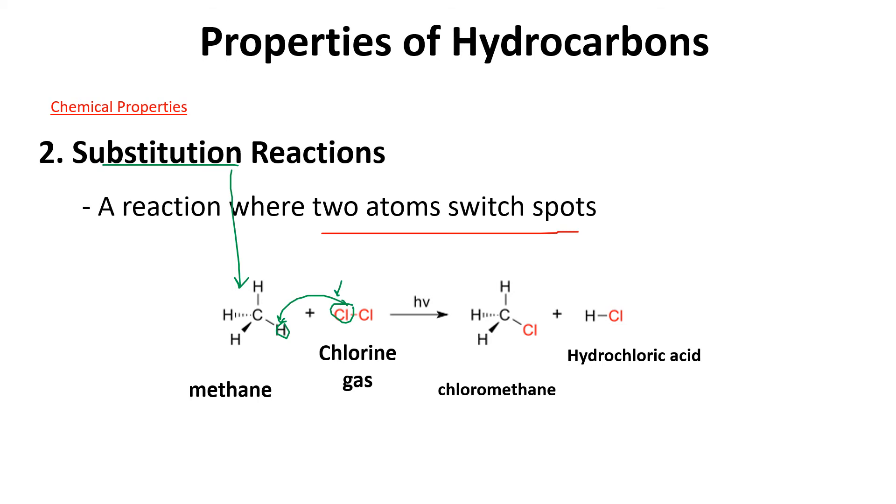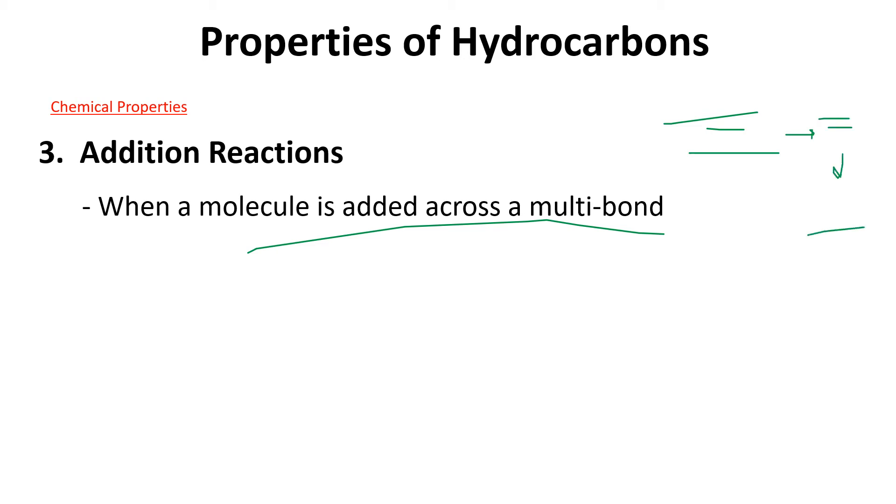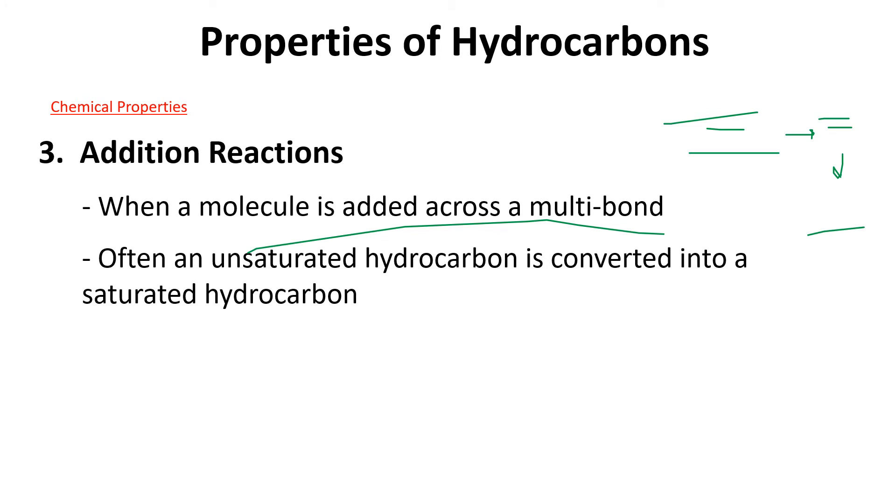Addition reactions are going to be for unsaturated hydrocarbons - double and triple bonds. What we're doing is we're adding something across that multi-bond and the multi-bond is getting reduced. If you have a triple bond, it's going to get reduced to a double bond, and a double bond gets reduced down to a single bond, one step at a time. Unsaturated gets converted to saturated. Here's a general version - you can see our X has gone to that carbon and the Y has gone to that carbon, and our double bond is broken down to a single bond.